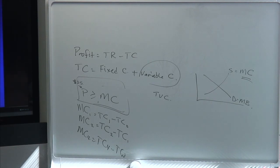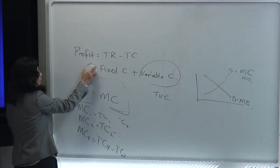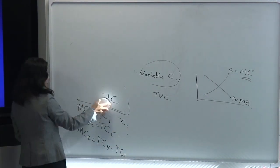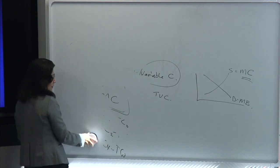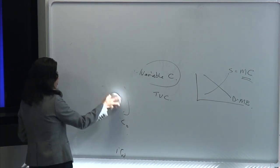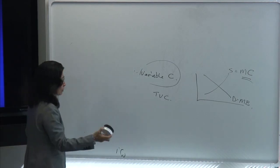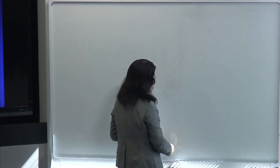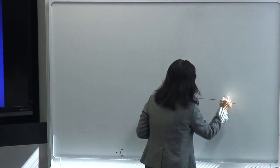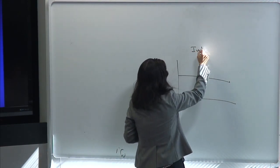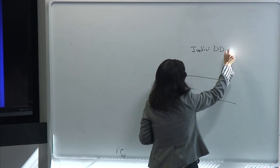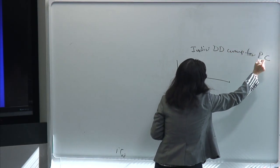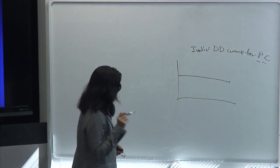Now we're getting to the gist of perfect competition. The perfectly competitive demand curve is a horizontal straight line. Don't forget — this is very important. PC stands for perfect competition, not personal computer. In a perfectly competitive market, marginal revenue equals price. They're considered price takers. When I put a P-bar there, it means price is fixed — at that price, you could sell as many units as possible.